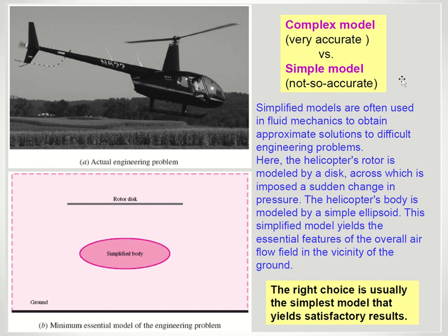Typically, the right choice is to select the simplest model that yields satisfactory results. It's up to you as an engineer to decide what is the simplest model that will give satisfactory results. Does it need to be complex, or can it be simplified? Do we need super high accuracy, or do we just need to know that the helicopter is not going to fall out of the air? You can make a complex model or a simple model, and both apply to whatever type of modeling you're doing.